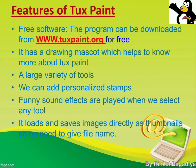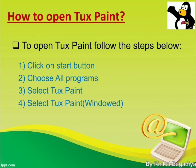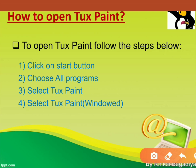So those are the features of Tux Paint. Now our next topic is how to open Tux Paint. If you want to open Tux Paint on your computer, follow these steps. Step one: click on the Start button in the taskbar. Step two: in the Start menu, choose All Programs. Step three: find and select the Tux Paint program. Step four: select Tux Paint Windowed. Two forms are available — windowed and full screen — so if you want to draw in full screen, you can open Tux Paint Full Screen as well.